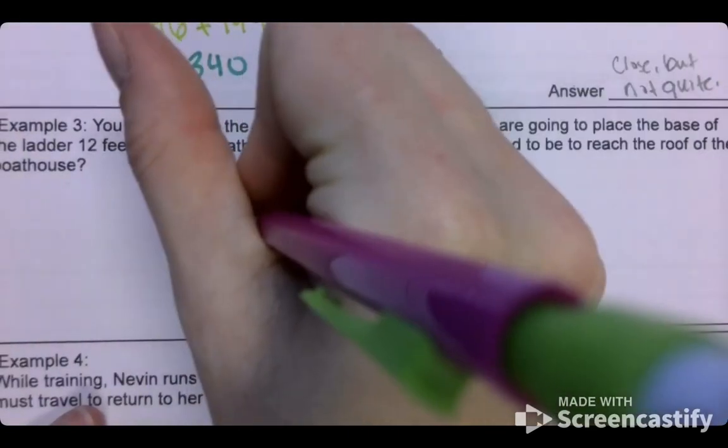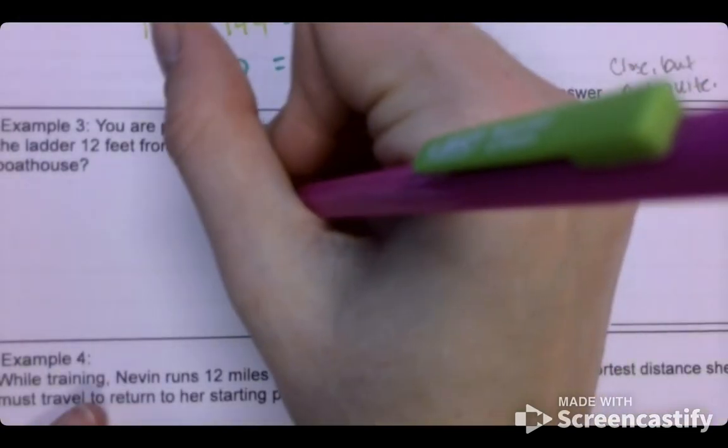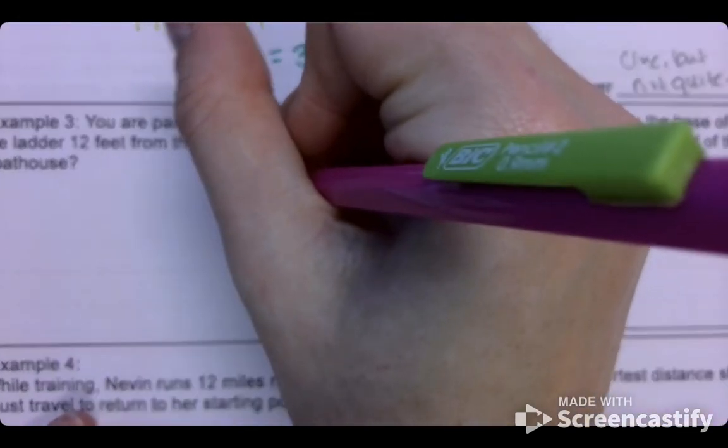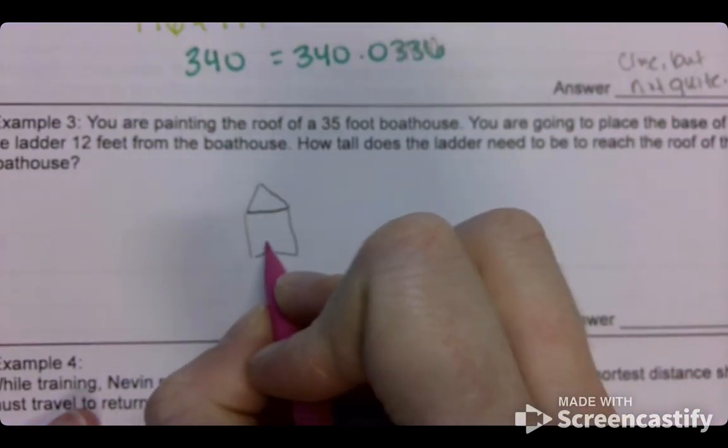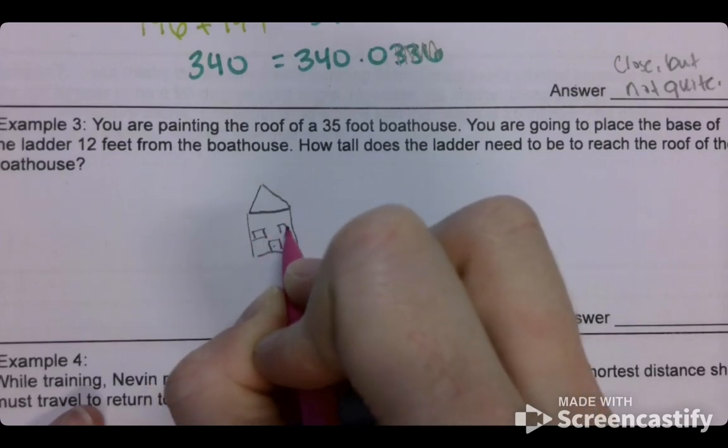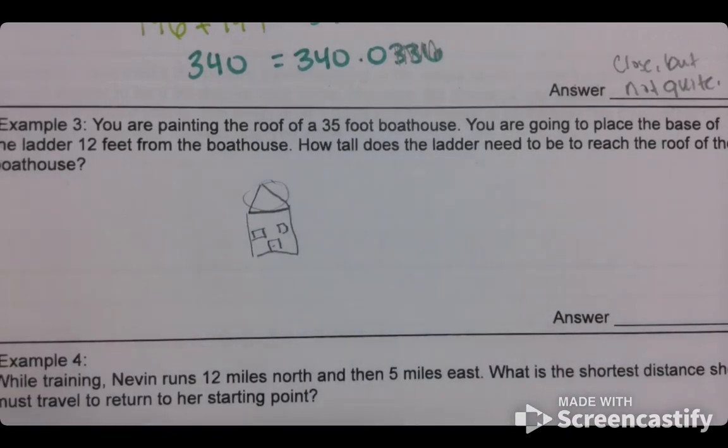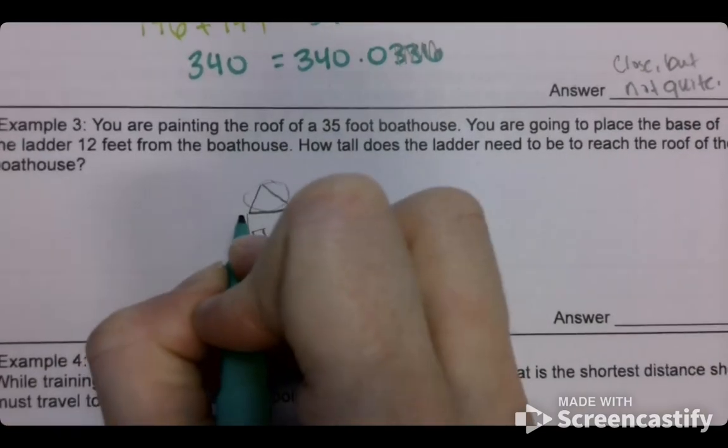So if you don't know how to draw a house, you do a square and then you do a triangle connecting up top. And look, you got your nice little house. Here's my little door and then we could draw some windows. So you are painting the roof, we're painting this part. We are placing the base of the ladder. So the base means the bottom, right? So here's my ladder.